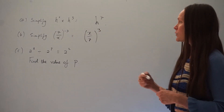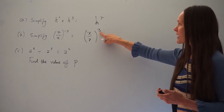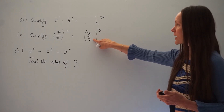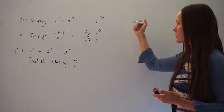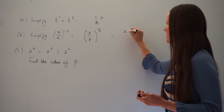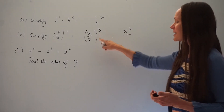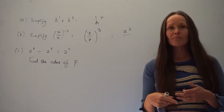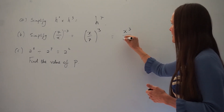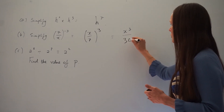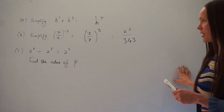The final step is to cube both the numerator and the denominator of this fraction. So x cubed is just x cubed. And 7 cubed is 7 multiplied by 7 multiplied by 7, which is 343. So there's the answer to part B.